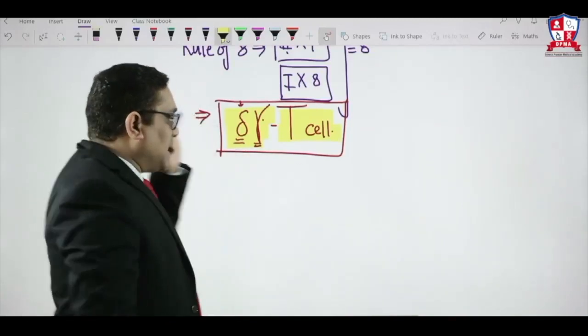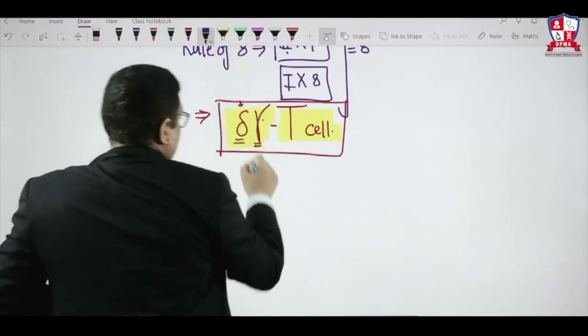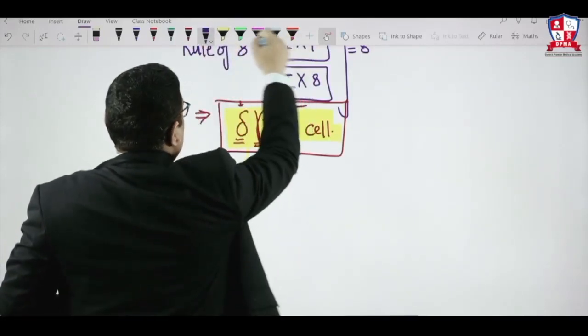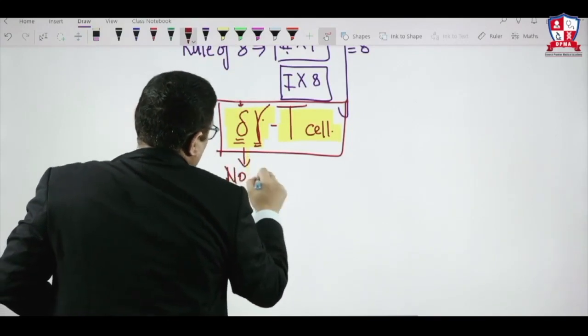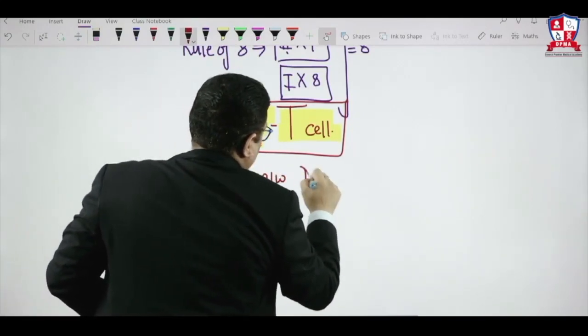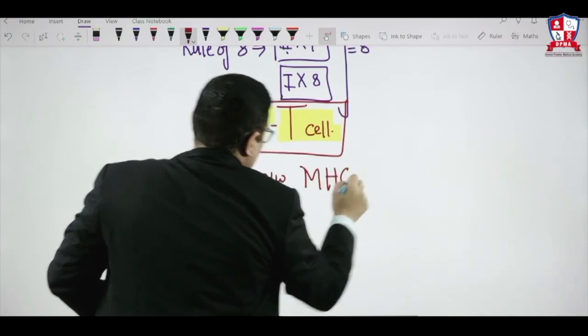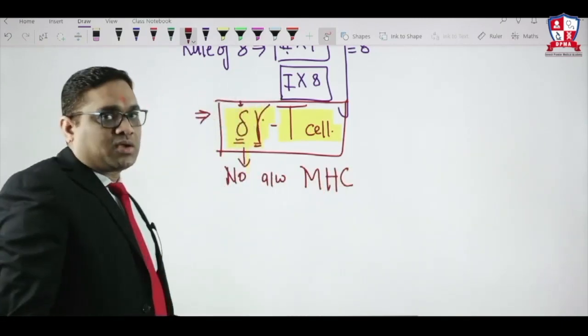Gamma delta T cells do not have alpha beta chain. So that is why there will be no involvement, no association with MHC molecule.